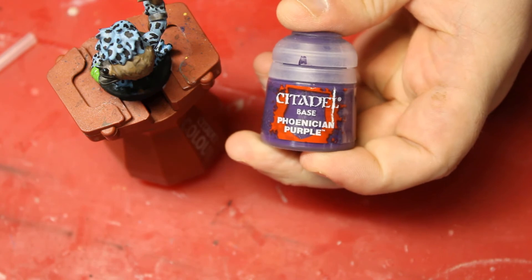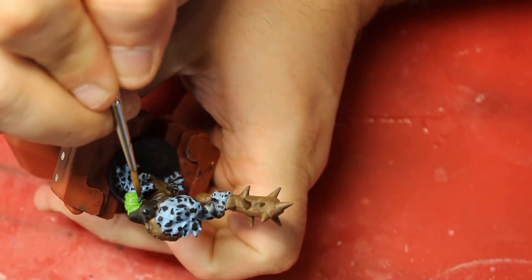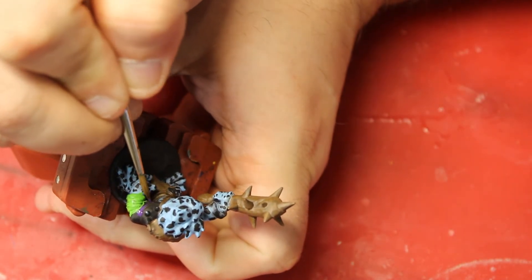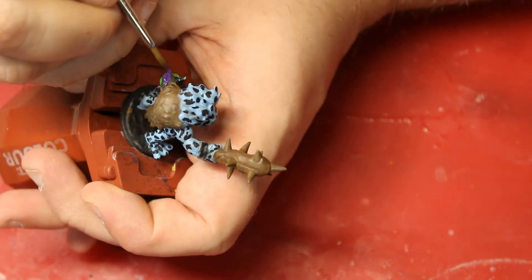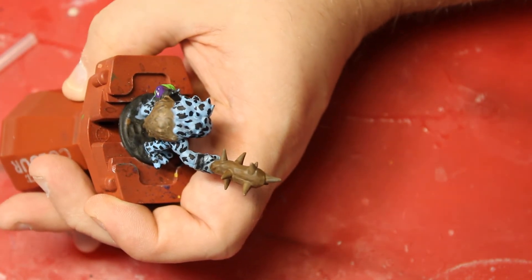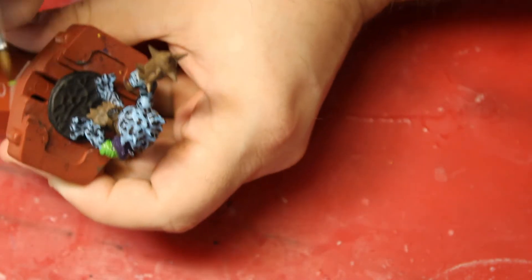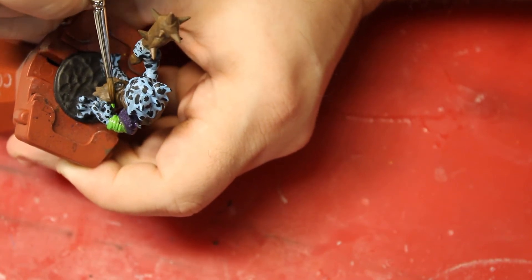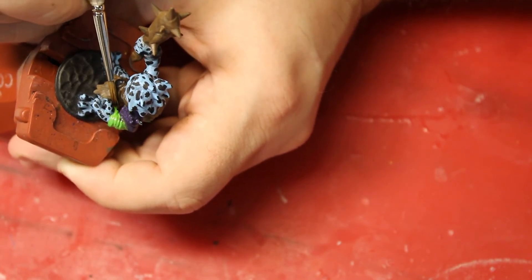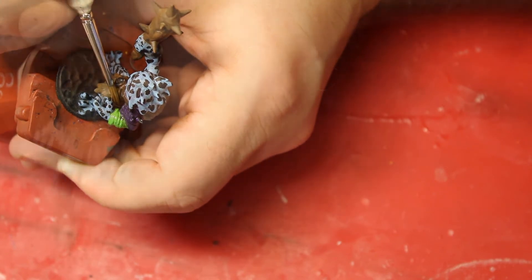I then come in with Phoenician Purple, and I do his shoulder pad purple. Again, it kind of contrasts with the lime green, but doesn't contrast with the nice blue that he has for a coat. And it kind of just makes the shoulder pad be a center of darkness and kind of stands out a little bit on this model.